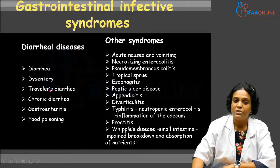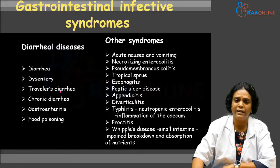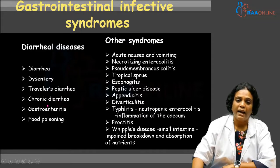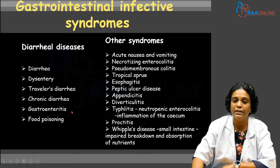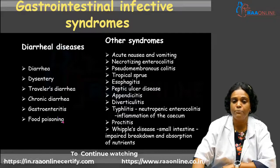Traveler's diarrhea usually occurs in individuals who travel across countries. Organisms like enterotoxygenic E. coli and protozoa such as Entamoeba histolytica, Giardia, or Cryptosporidium can cause traveler's diarrhea. In chronic diarrhea, the patient will have diarrhea for more than two to four weeks. In gastroenteritis, there will be inflammation of the mucosa accompanied by diarrhea. Food poisoning is mainly due to consumption of food contaminated with bacteria or the toxins produced by bacteria.